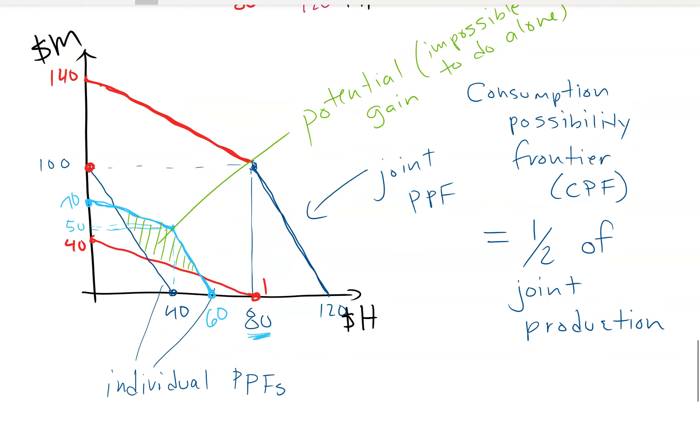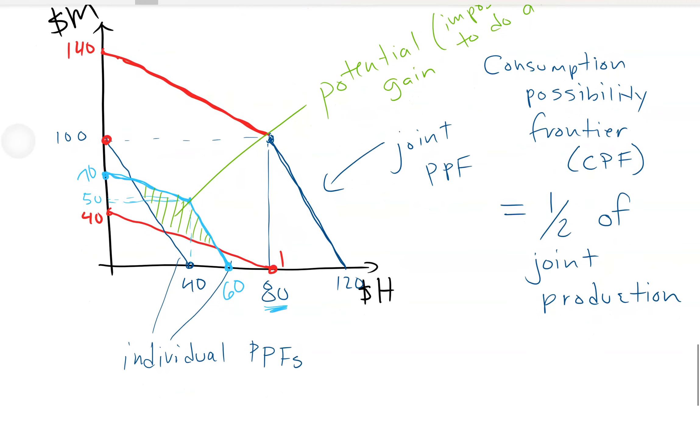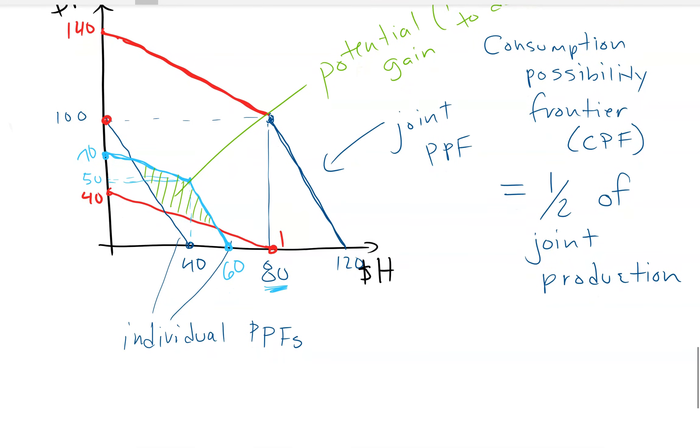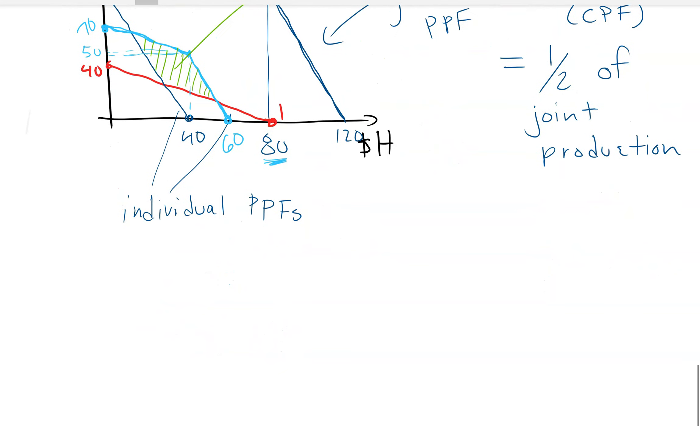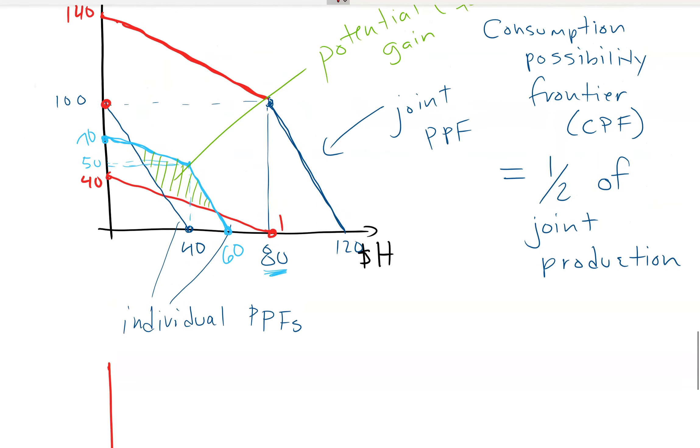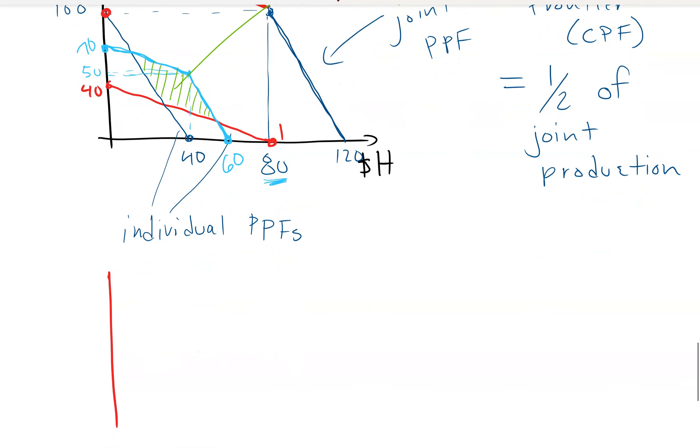The second thing to notice is what would happen if they become more similar. So if they become more similar, then these lines get straighter. Both of the lines get straighter. And this zone gets smaller.